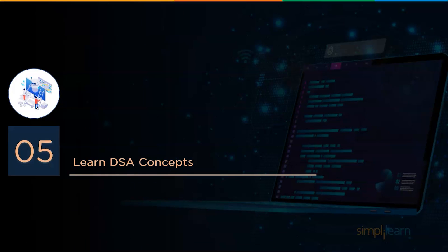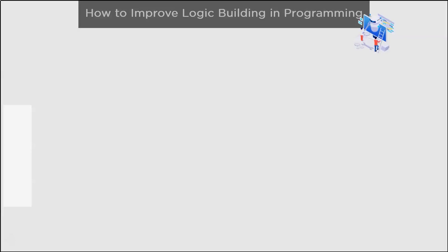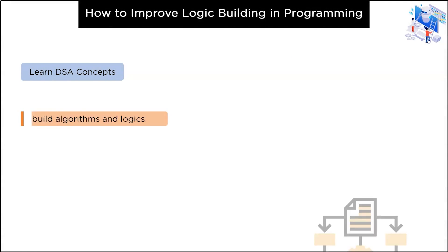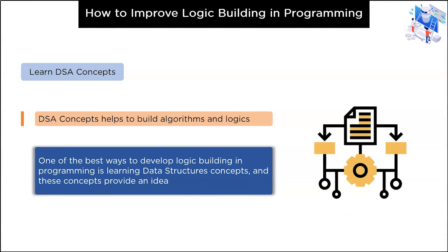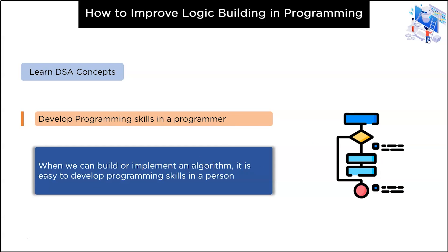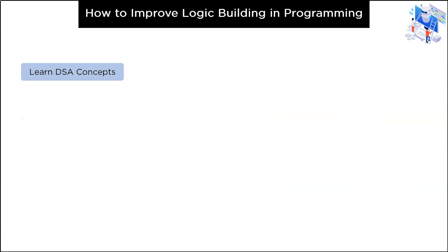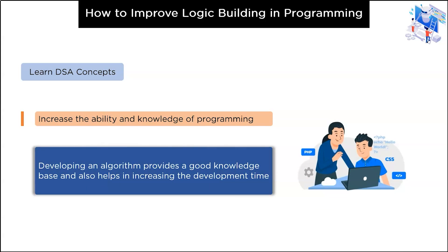Stage five is about learning data structures and algorithms concepts. Data structures and algorithms concepts help you build algorithms and logics. One of the best ways to develop logic building in programming is learning these concepts, which provide an idea on how to build an algorithm. When we can build or implement an algorithm, it is easy to develop programming skills. Developing an algorithm also provides a good knowledge base and helps in increasing development time.